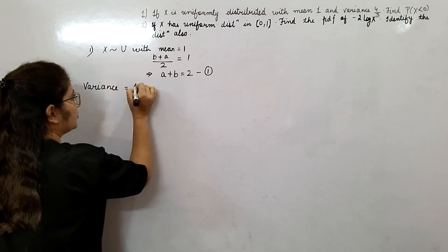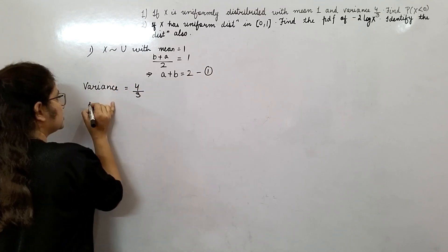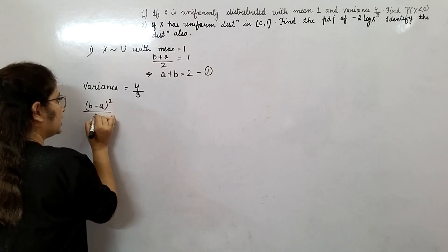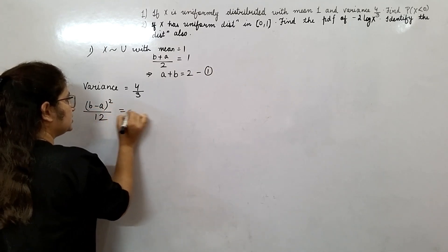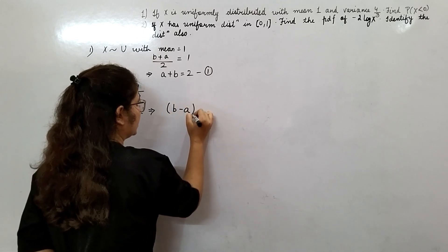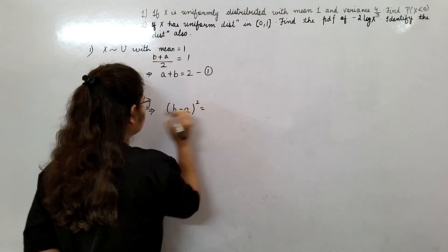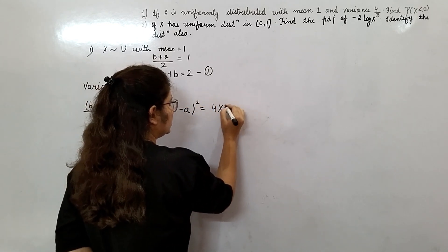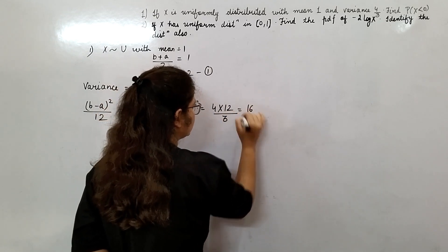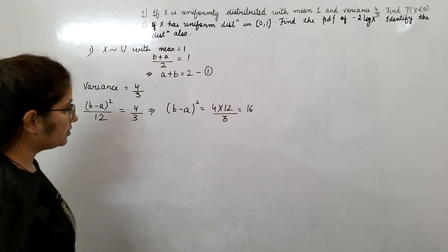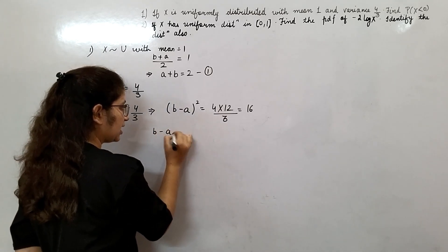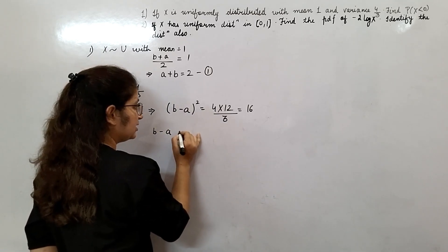The formula for variance is (b - a)² / 12 = 4/3. This implies (b - a)² = 4 × 12/3, which is 16.